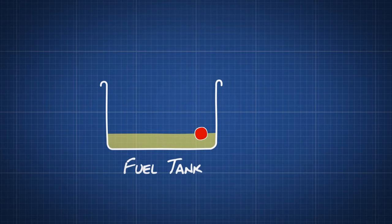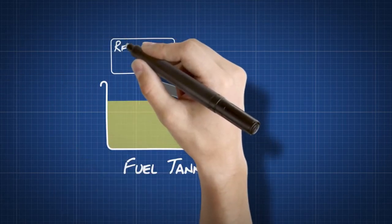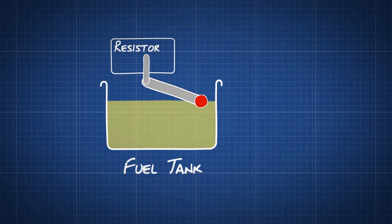A small float sits in your car's fuel tank. The float bobs on top of the fuel. The higher the level, the higher it floats. The float is attached to a thin metal rod that scrapes up against a resistor.